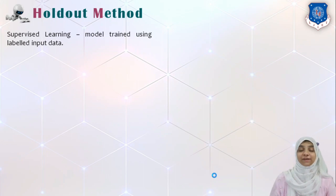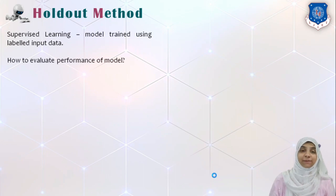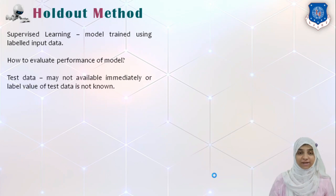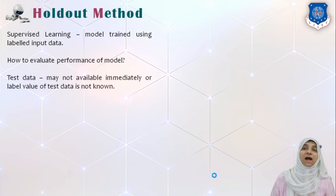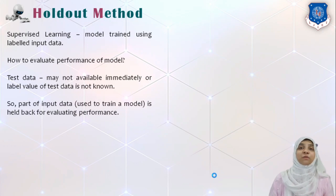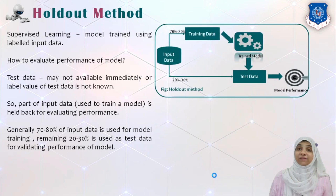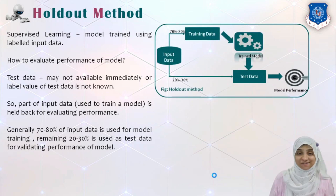In supervised learning, a model is trained using labeled input data. Once the model is trained, how do we evaluate the performance of a model? How can we judge that the model is predicting good values or good labels? That's why we must have something called test data.